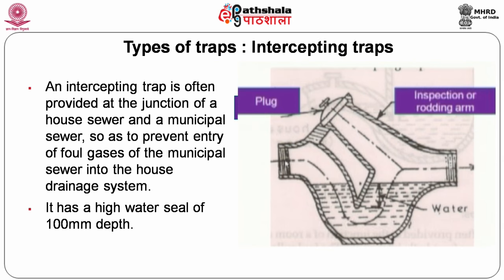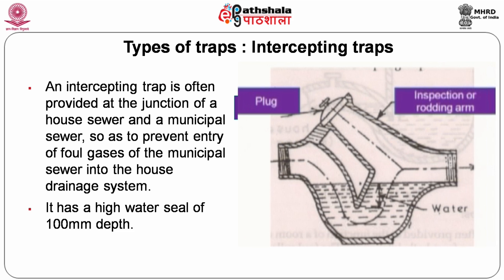The intercepting trap is provided at the junction of the house drainage and the street drain, to prevent foul gas from the municipal sewer entering the household. It has a high water seal — while other fixtures have 40–50 mm, this requires 100 mm because it is connected to the street sewer where gas generation is greater.